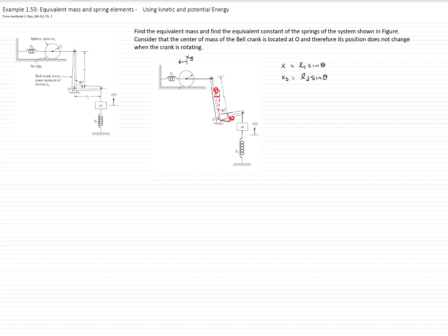x equals L sine of theta, and x_s equals L2 sine of theta. For small values of theta, sine of theta becomes theta. Therefore, x equals L1 theta and x_s equals L2 theta. Since we want to express everything in terms of x, theta equals x over L1, and therefore x_s, the displacement of the sphere, will be L2 over L1 times x.